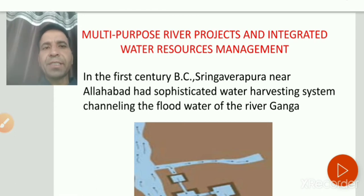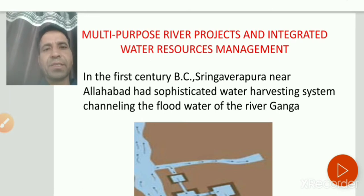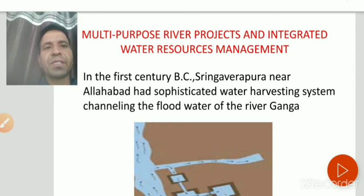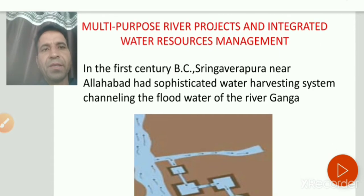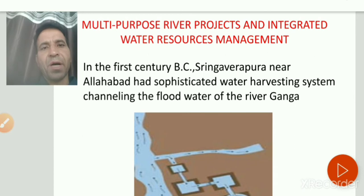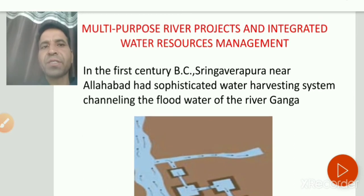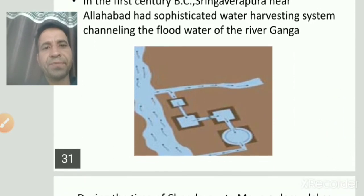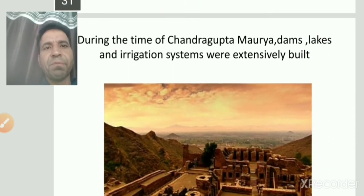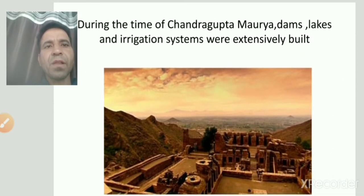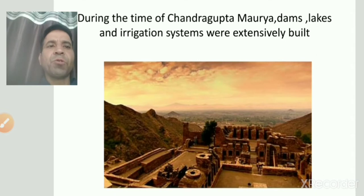In the first century before BC, we will discuss some examples mentioned in our book. The first picture here shows a harvesting system to channel flood water from the Ganga river, which is represented in India. One more example: during the time of Chandragupta Maurya, we see a water harvesting system.